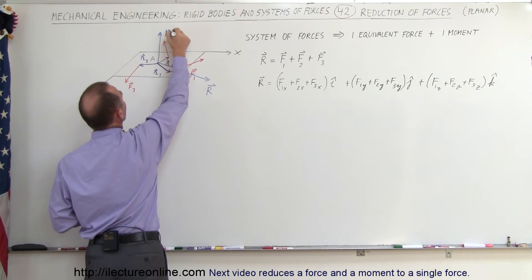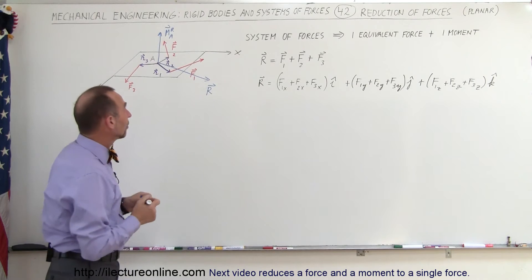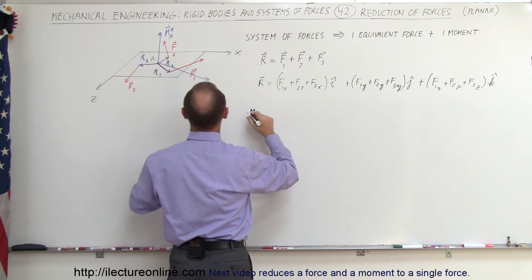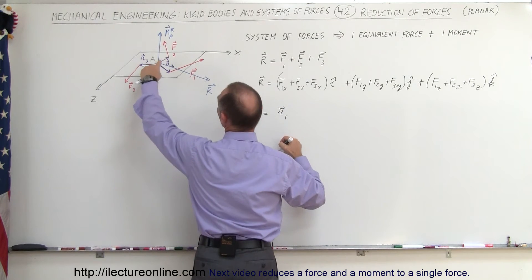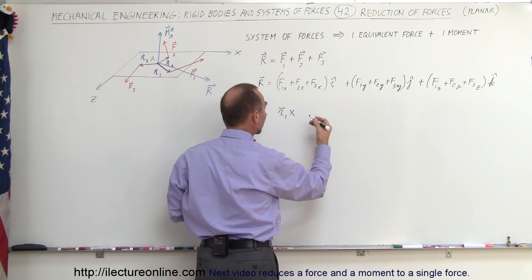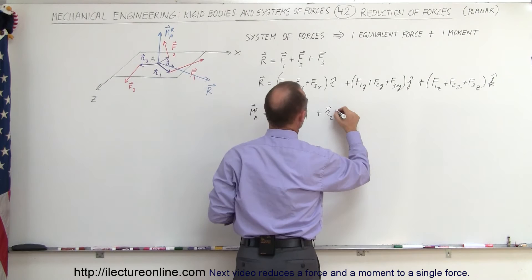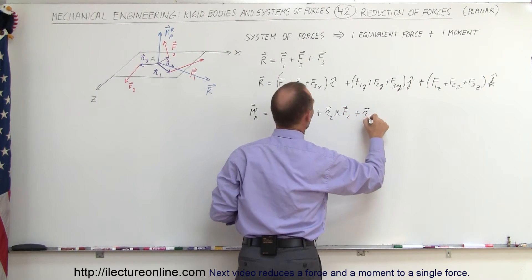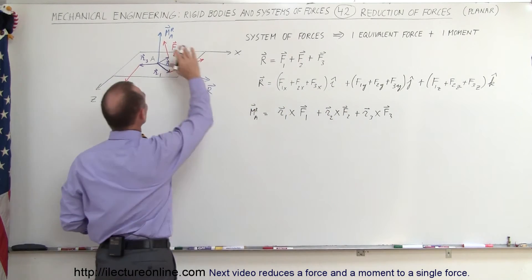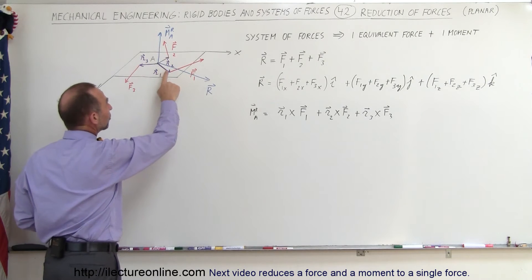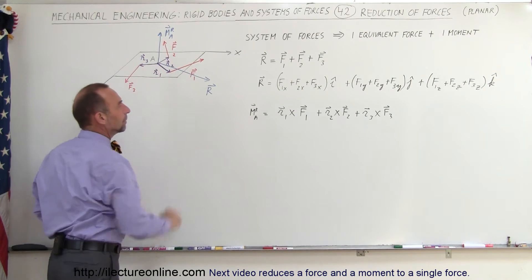We have to include the moment about point A — the resultant moment M sub RA. The resultant moment caused by those three forces is simply the position vector to where the first force acts crossed with F1, plus the position vector to where the second force acts crossed with F2, plus the position vector to where the third force acts crossed with F3. This gives the resultant moment, so all three forces combine into a single force at A plus a compensating moment.